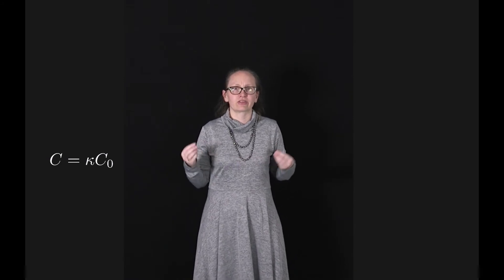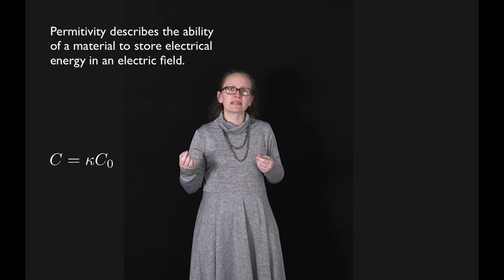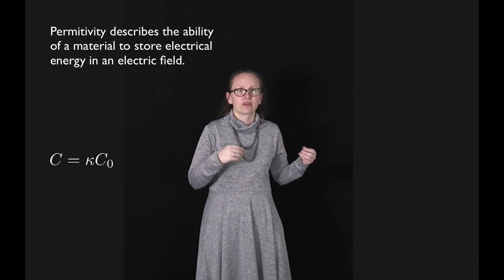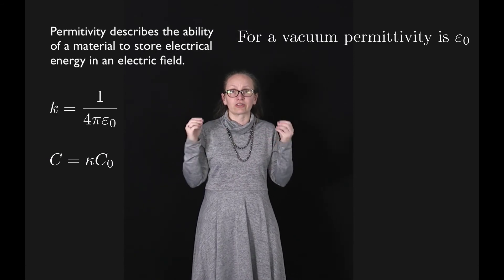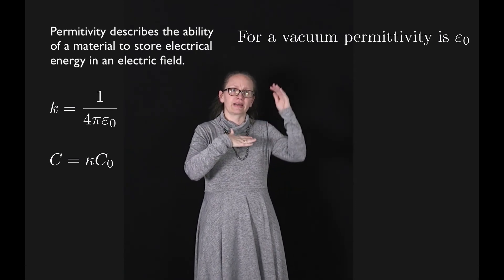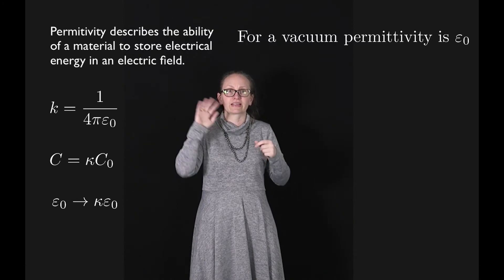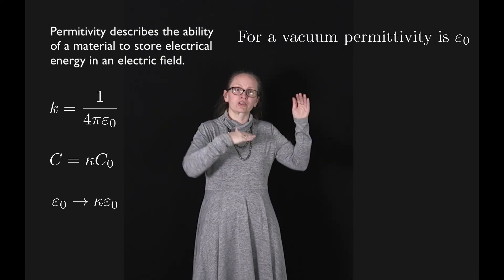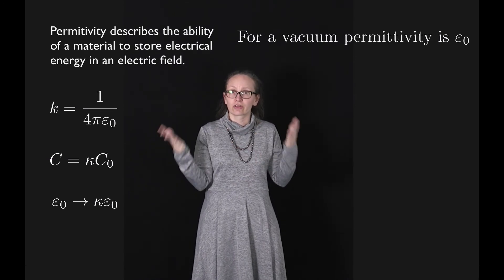One way of thinking about the dielectric constant is as a modification of the permittivity of the system. Permittivity describes the ability of a substance to store electrical energy in an electric field. For a vacuum we have ε₀, related to Coulomb's constant through k = 1/(4πε₀). If we consider a region filled by a dielectric, we can modify all equations containing ε₀ by replacing ε₀ with κε₀ — for example, potential difference equations and electric field equations.